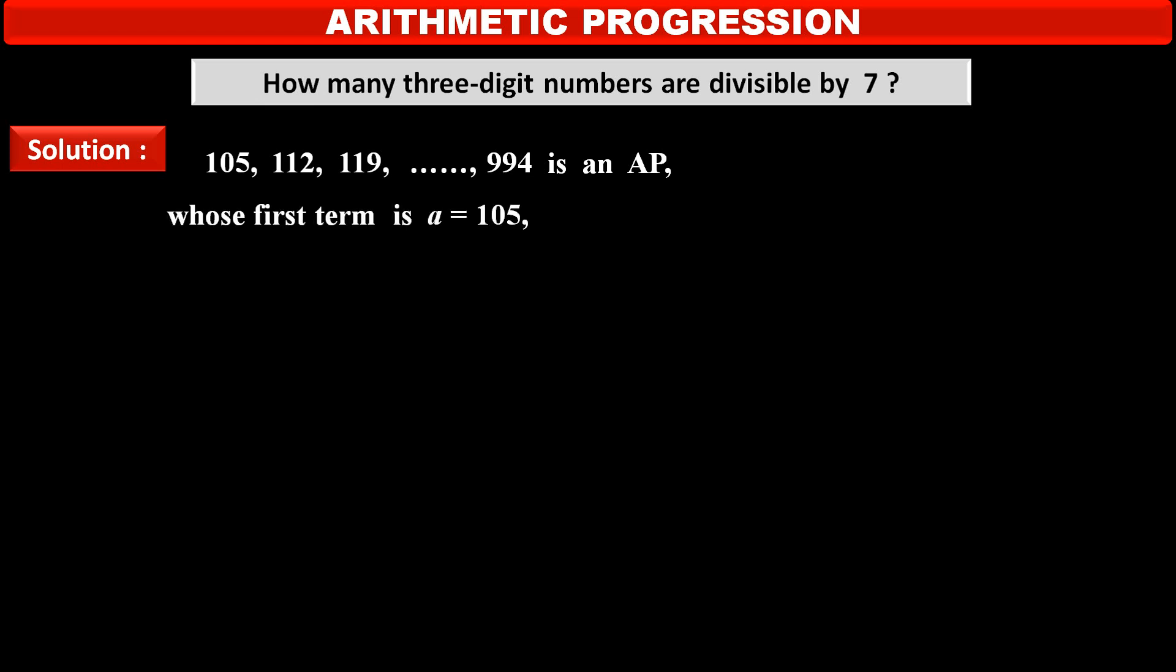Therefore, first term of this AP is a = 105 and the common difference is d = 7 and the last term of this AP is an = 994. And, we have to find out value of N means total number of terms, 3-digit numbers divisible by 7. So, we have to apply formula of Nth term, an = a + (n - 1)d.